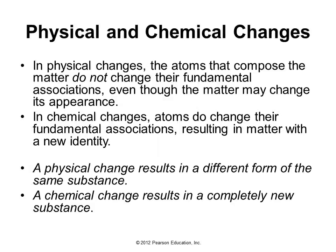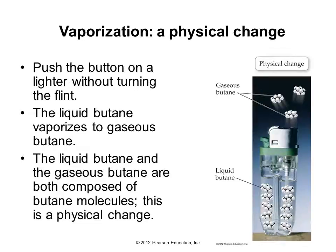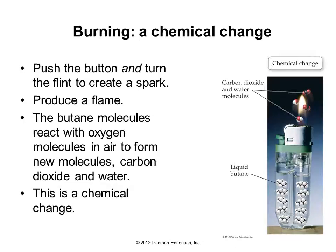A physical change results in a different form of the same substance. A chemical change results in a completely new substance. Here we have an example of a butane lighter. If you merely push the button, you begin to release butane gas — that's merely a vaporization, a physical change from liquid butane to gaseous butane. But if you turn the wheel that causes the flint to spark, the gaseous butane combines with oxygen in the air and makes water and carbon dioxide. This is an example of a chemical change.